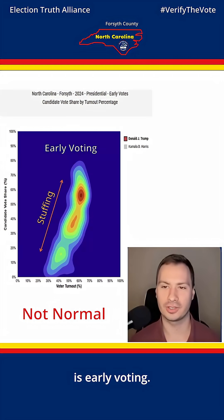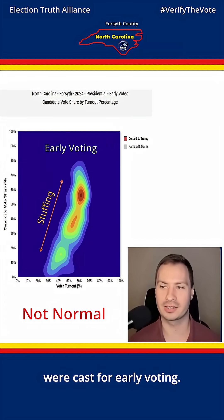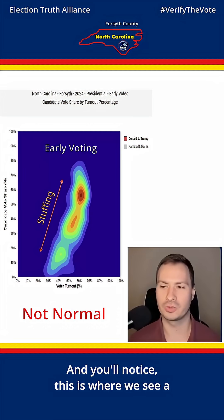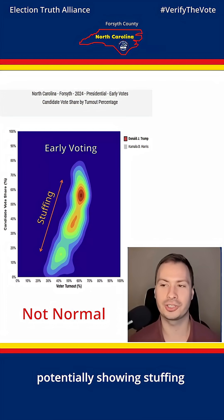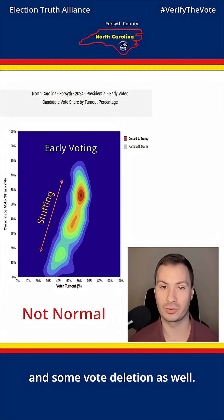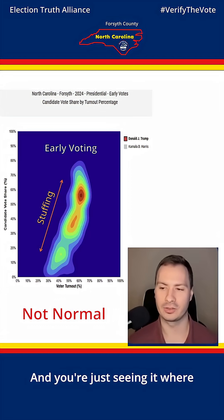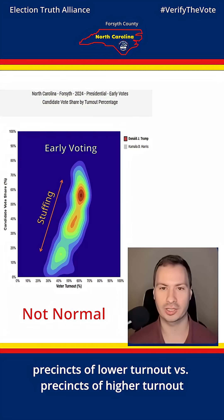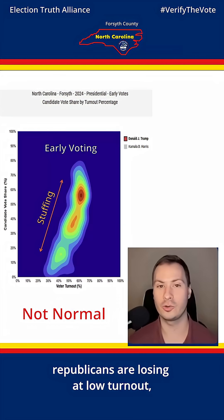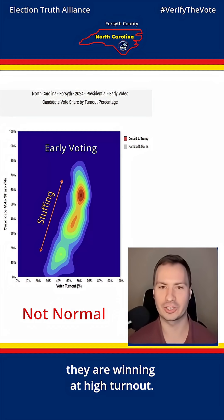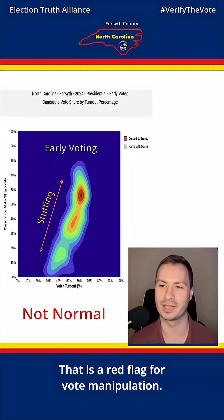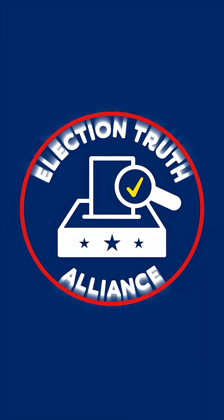On the right is early voting — 72.6 percent of all votes cast were cast during early voting. This is where we see a strong correlation potentially showing stuffing and some vote deletion mixed in as well. At precincts of lower turnout, Republicans are losing; at precincts of higher turnout, Republicans are winning. That is a red flag for vote manipulation.